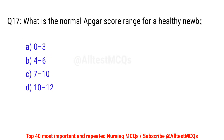Question No. 17: What is the normal Apgar score range for a healthy newborn? The right option is C: 7 to 10.